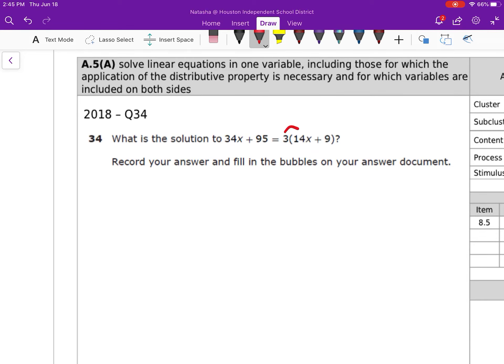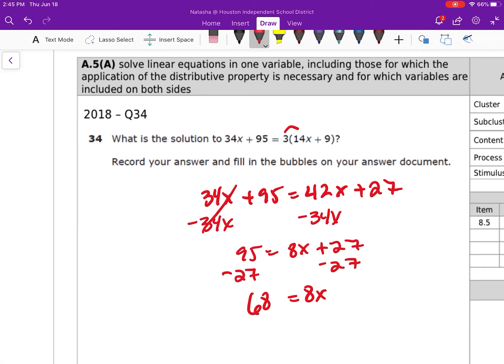Same thing here. Combining like terms, we've got a distribution here. So this is going to come to 34X plus 95 is equal to 14 times 3 is 42X. 3 times 9 is 27. Combine like terms. 95 is equal to 42 minus 34 is 8X plus 27 minus 27 minus 27. 8X is equal to 95 minus 27 gives me 68. Divide by 8 gives me X is equal to 8.5.